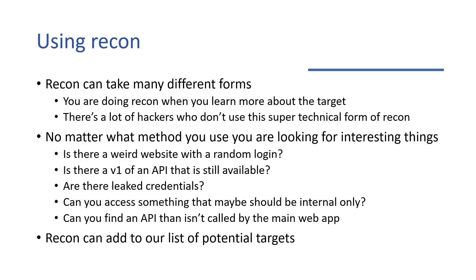The first thing is a weird website, a random login, or something that should be internal only — those are great things you can find with lazy recon where you get screenshots and can see what's on certain websites. When looking at API versions: is there a version one that still has security vulnerabilities that still accesses the same resources as newer versions? Can you find an API that isn't called by the main web app — maybe it's called internally or just left there by accident? And with Google dorking, we're looking for leaked credentials that actually work.